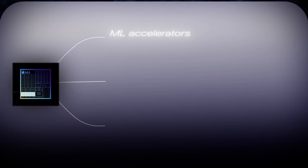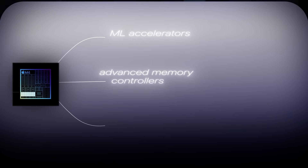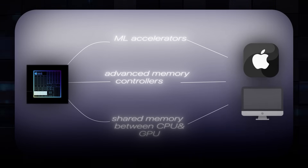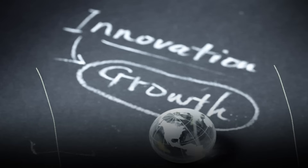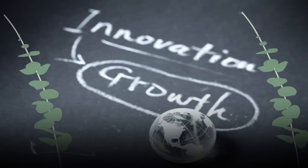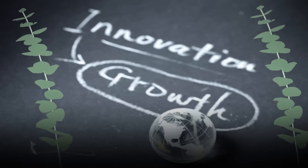Apple's chips, for example, include integrated ML accelerators, advanced memory controllers, and shared memory between CPU and GPU, all optimized for macOS and iOS. This has led to much faster innovation and specialization in the ARM ecosystem.